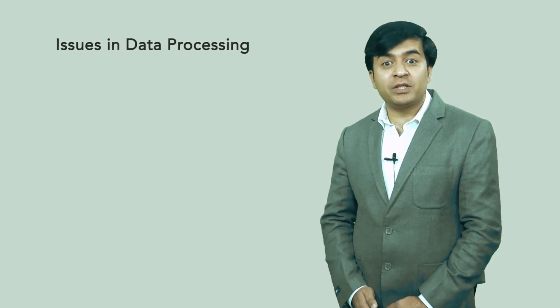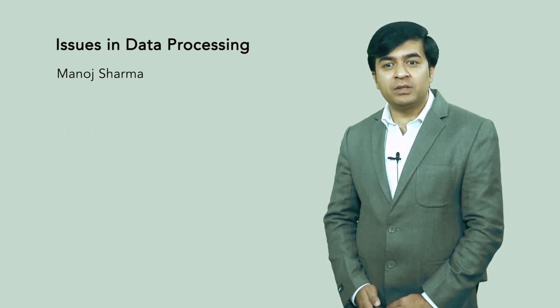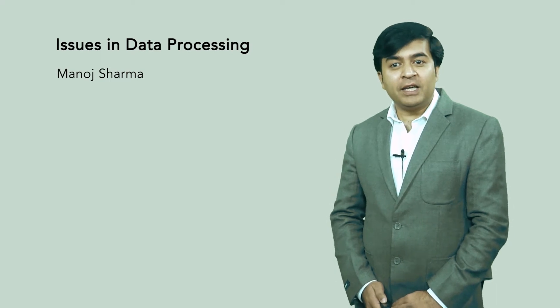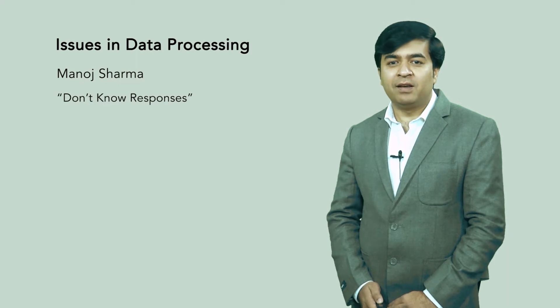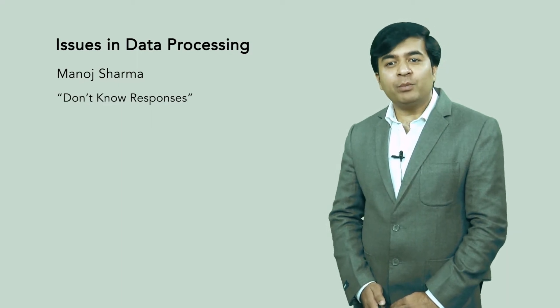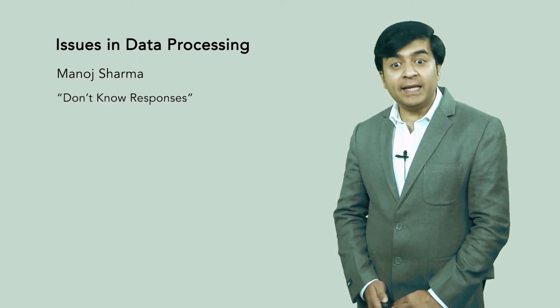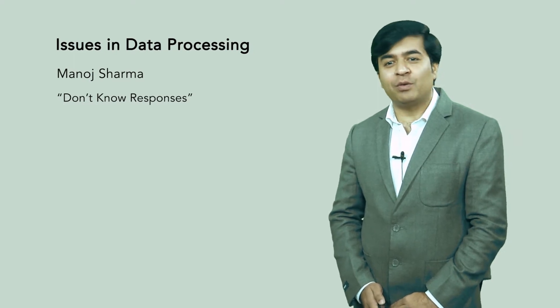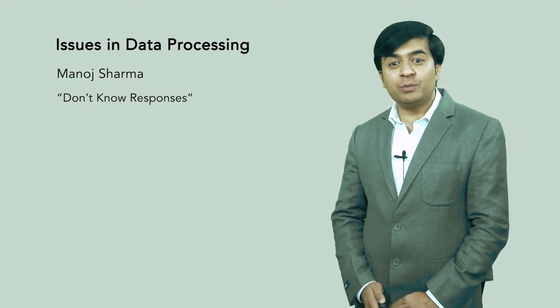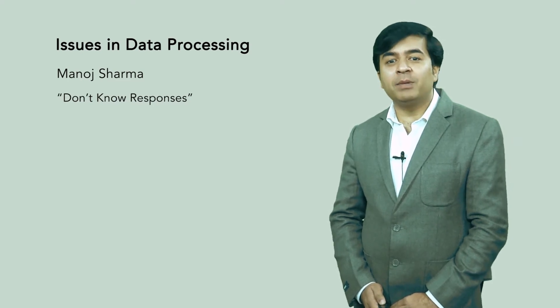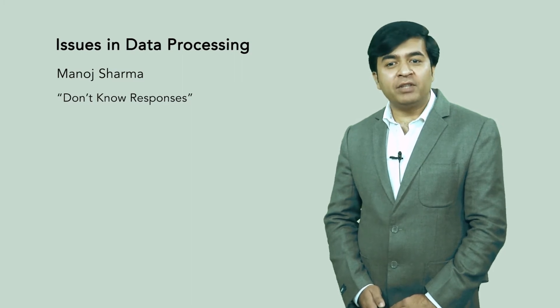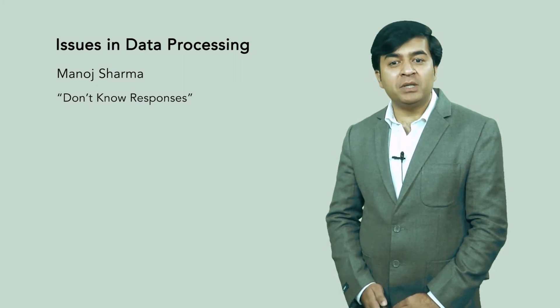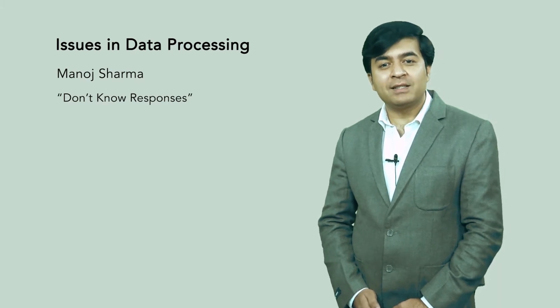There are a number of issues in data processing. Sharma in his book observes a number of issues. He perceives the first problem as don't know response. During the process of data, it is challenging to handle don't know responses from respondents. Don't know responses in large numbers put the credibility of questions in question. A good questionnaire with clear and relevant questions must be asked to avoid don't know responses.